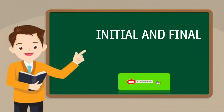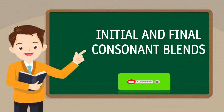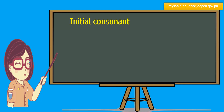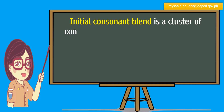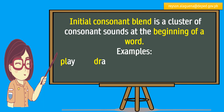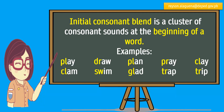Initial and Final Consonant Blends. Initial Consonant Blend is a cluster of consonant sounds at the beginning of a word. Examples: play, clam, draw, swim, plan, glad, pray, trap, trip.